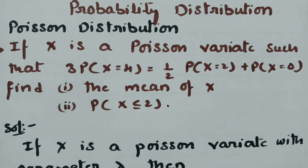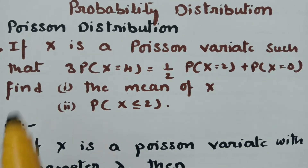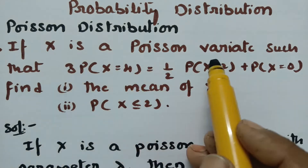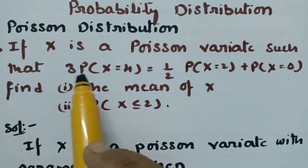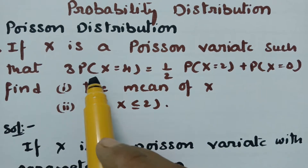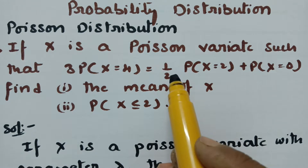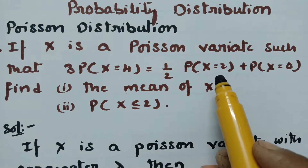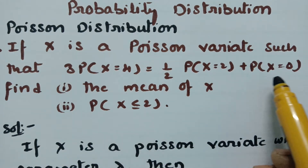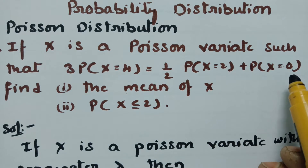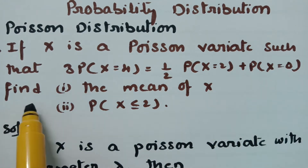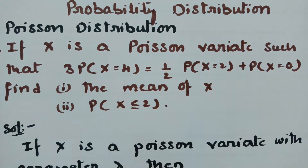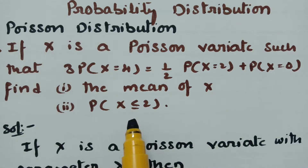This video is on Poisson distribution. We are going to solve a problem: if x is a Poisson variate such that 3 times the probability of x equals 0 is equal to half times the probability of x equals 2 plus probability of x equals 0. We have to find the mean of x and the probability of x less than or equal to 2.